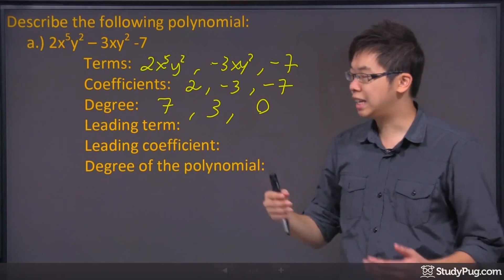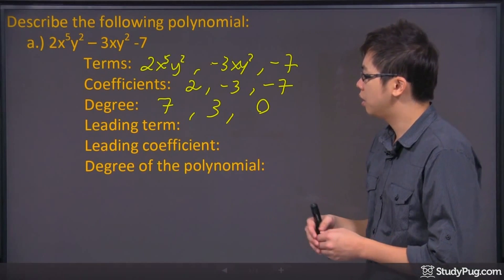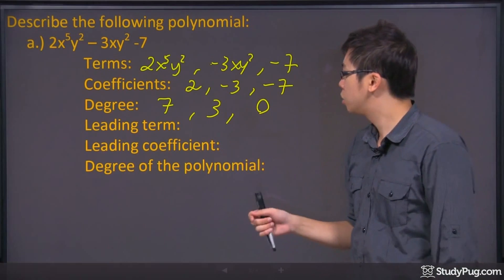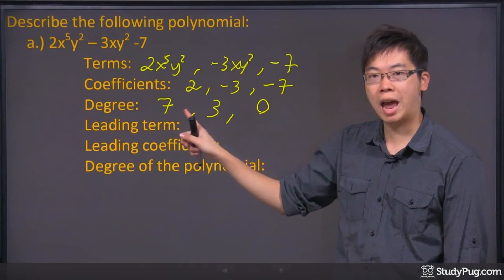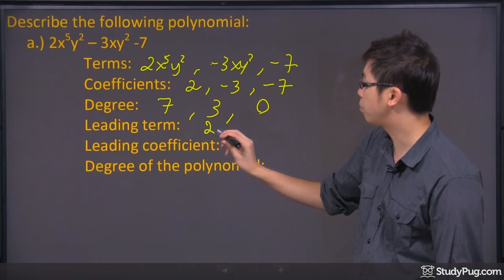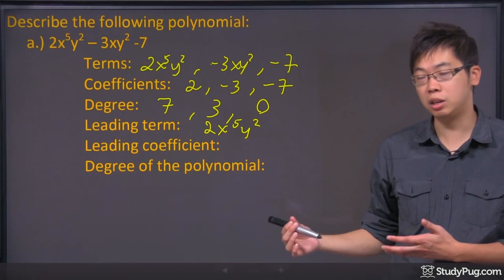The next one over here is called the leading term. Well, the leading term means that there is a term here that has the highest power. So if you look at the degree here, which is the power, this one, the first one has a 7. So that would be the leading term. So you're just going to have to copy down the term with the highest power. So it's called the leading term.